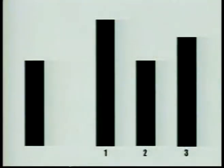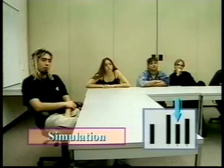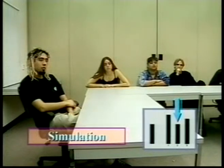We'll start with subject number one. On the first two trials, the confederates match the stimulus line to the standard line, giving the right answer. Subjects respond in turn: two, two, two, two, two.